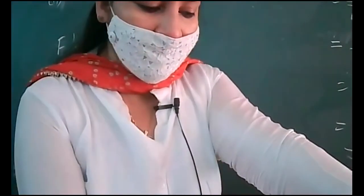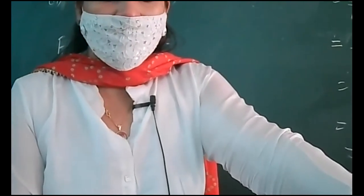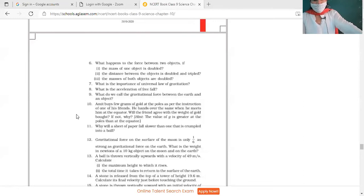Seventh and eighth question we have already done. Don't do it on the copy. Seventh is importance of universal law of gravitation. Eighth is what is acceleration of free fall, means acceleration due to gravity. Nine: what do we call gravitational force between earth and an object? Force of gravity. Don't do these as well, you can write on the book itself.